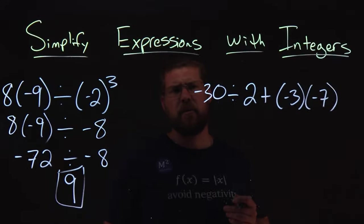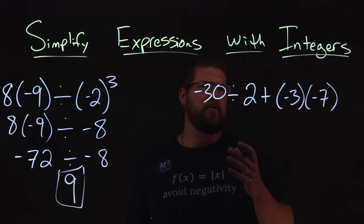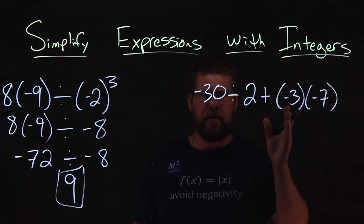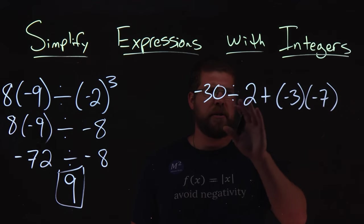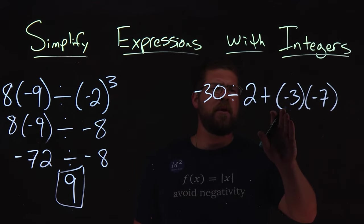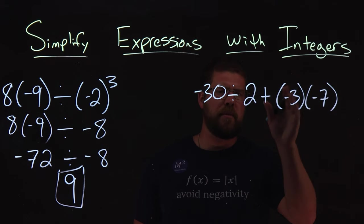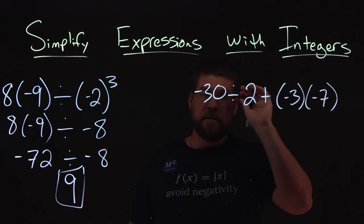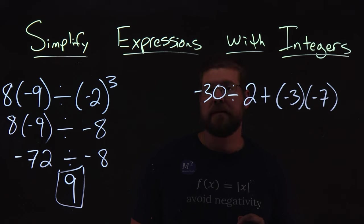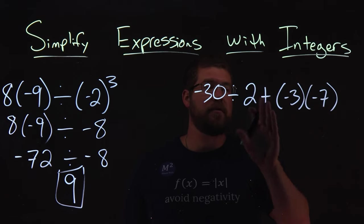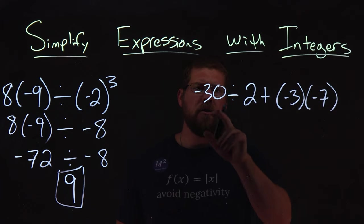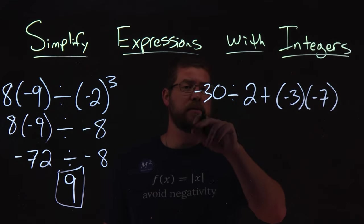What about our second one here? Well, our order of operations tells us we have parentheses and exponents, then multiplication and division. Everything within our parentheses first here is just by itself. Next thing down I see is that multiplication and division, but we start reading left to right first. So starting on the left, we see division first.